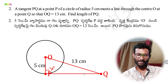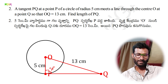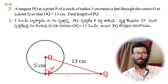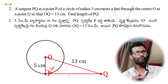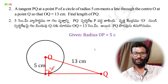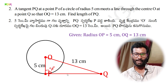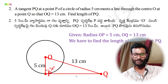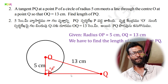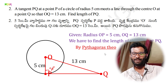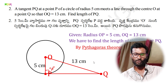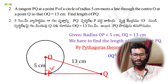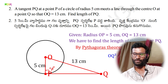We apply the Pythagoras theorem. Given: OP equals 5 centimeters and OQ equals 13 centimeters. We need to find PQ. By Pythagoras theorem: OQ² = OP² + PQ².